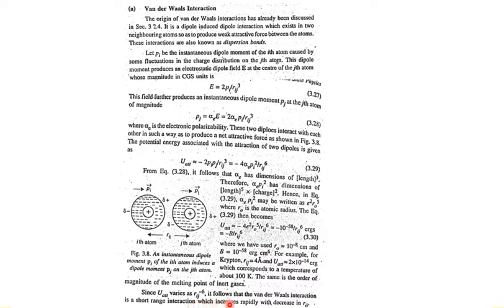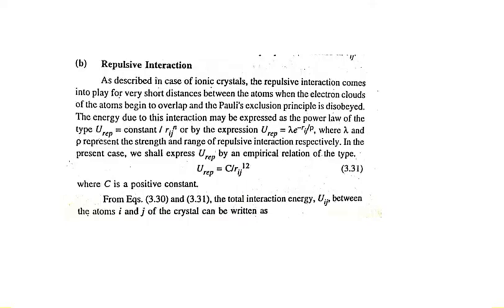Since U_attractive varies as r_ij⁻⁶, it follows that van der Waals interaction is a short-range interaction which increases rapidly with decrease in r_ij. As the distance increases, this interaction decreases very rapidly. The value is large at short range but decreases quickly as the distance increases slightly.